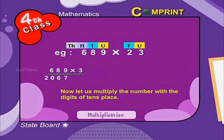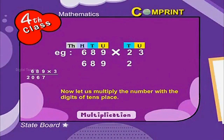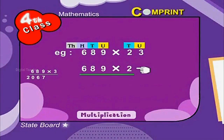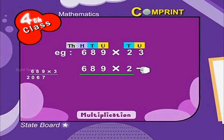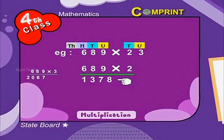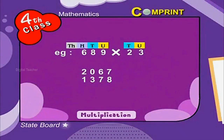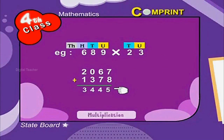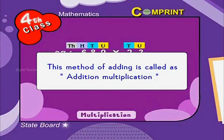Now let us multiply the number with the digit in the tens place. That is 689 into 2. We get the product 1378. Let us add both the numbers. This method of adding is called addition multiplication.